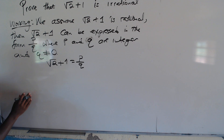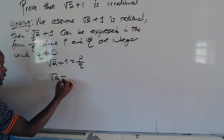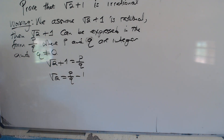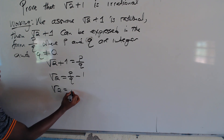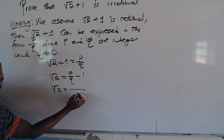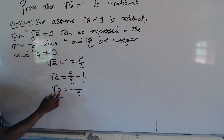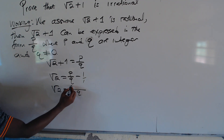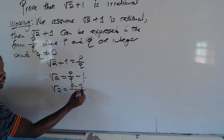Since we are expressing square root of 2 plus 1 in the form P over Q, it is the same as writing: square root of 2 plus 1 equals P over Q. We make square root of 2 the subject, so square root of 2 equals P over Q minus 1. Finding the lowest common denominator, which is Q, we get square root of 2 equals P minus Q, all over Q.